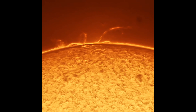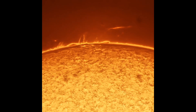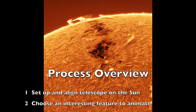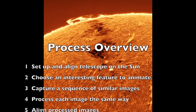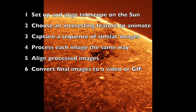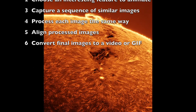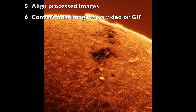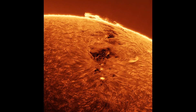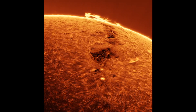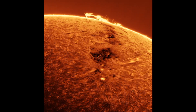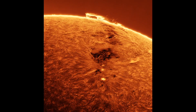Today we're going to take a look at how to create a video of activity on the Sun. An overview of the process is as follows: set up and align your telescope and focus on the Sun; choose an interesting feature to animate; capture a sequence of similar images; process each image the same way; align the images together; and finally convert the images into a video or a GIF.